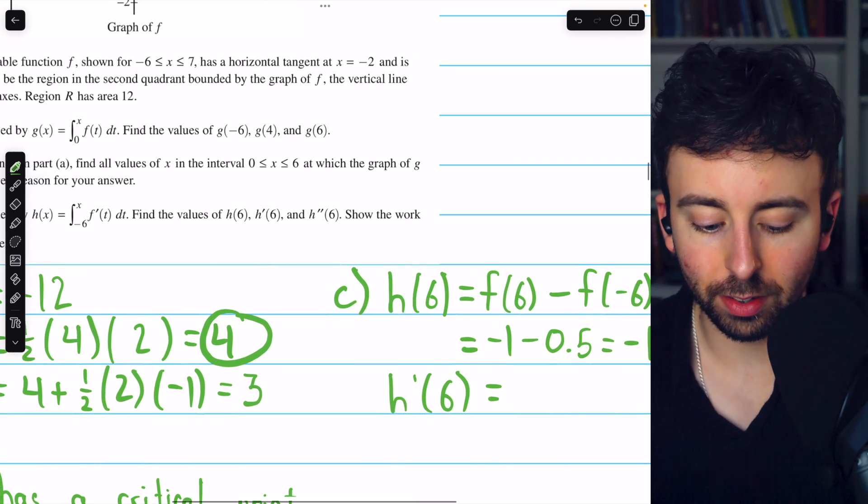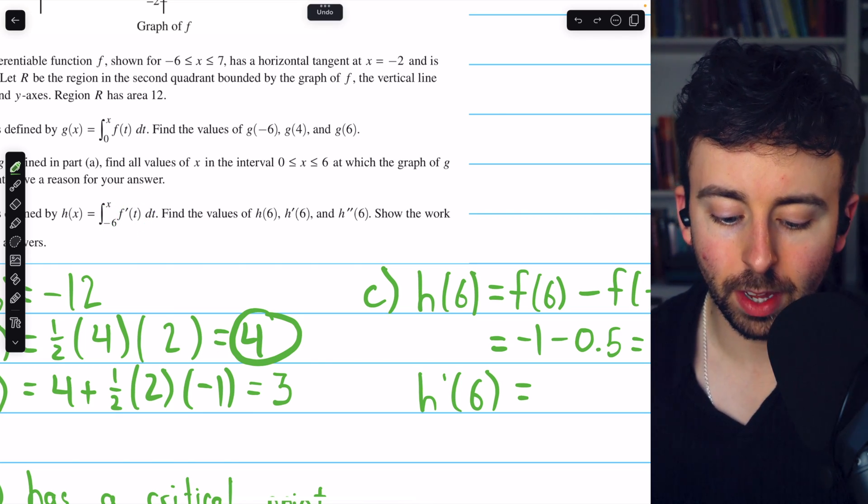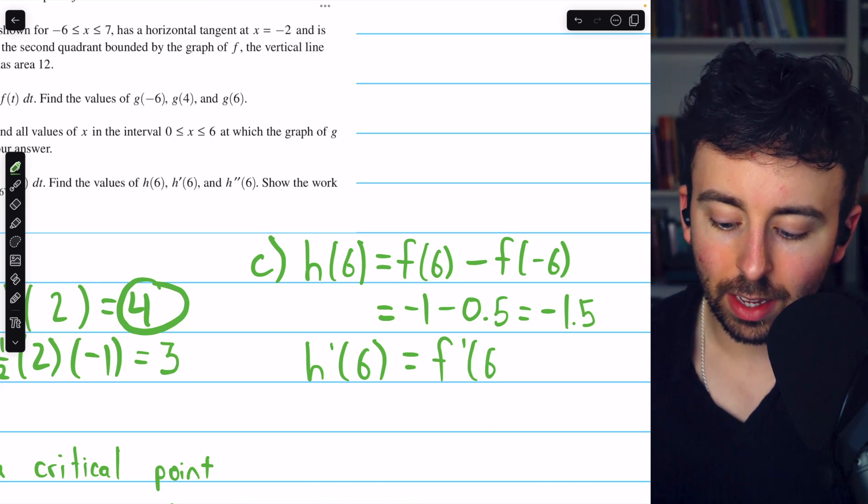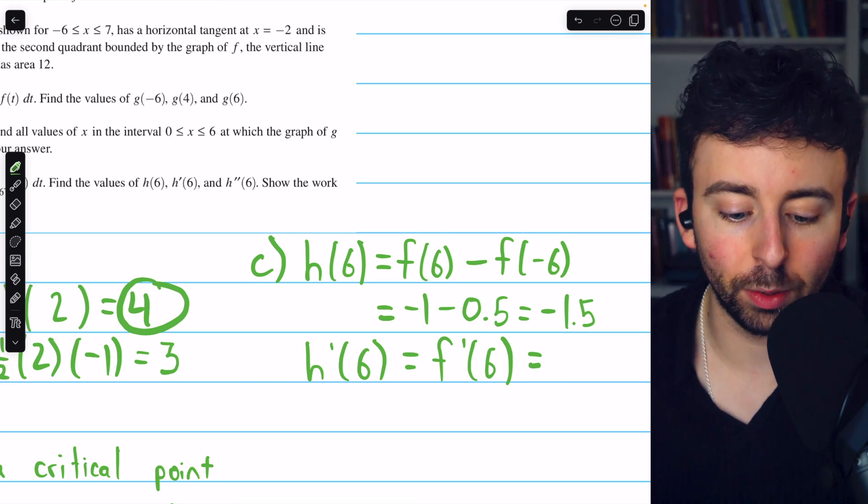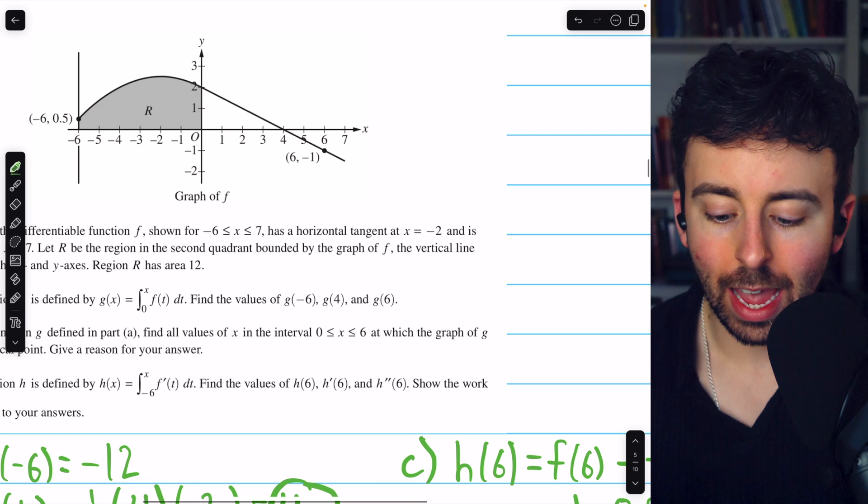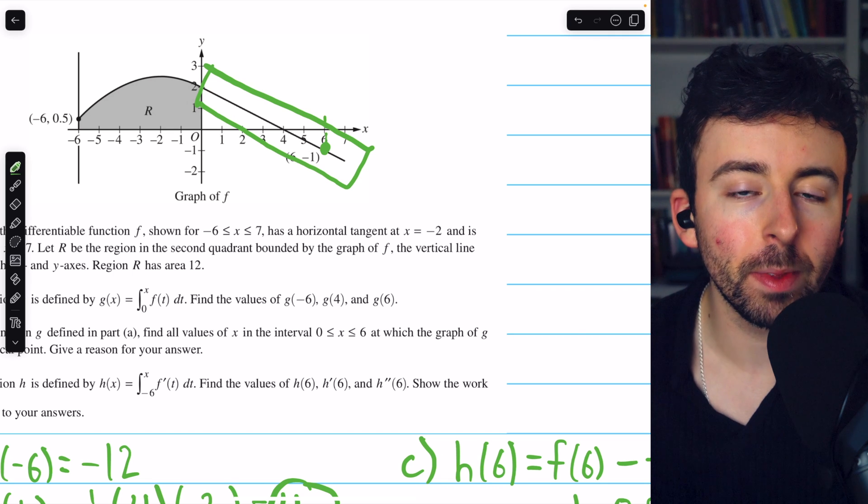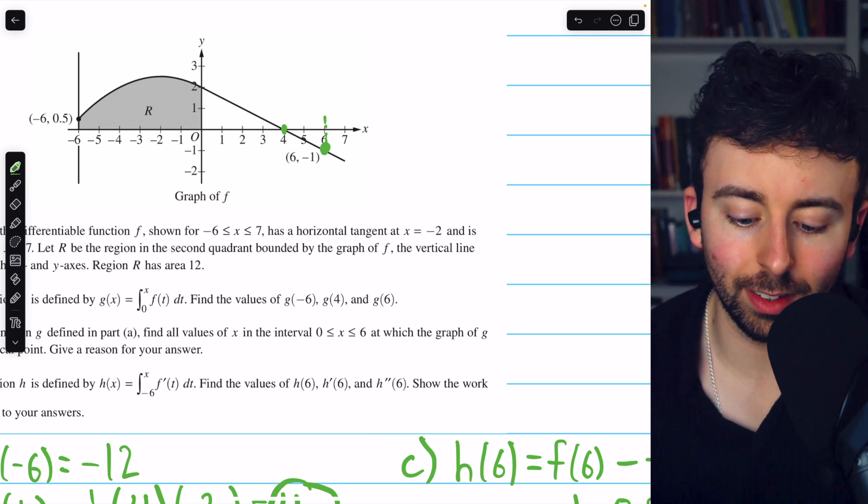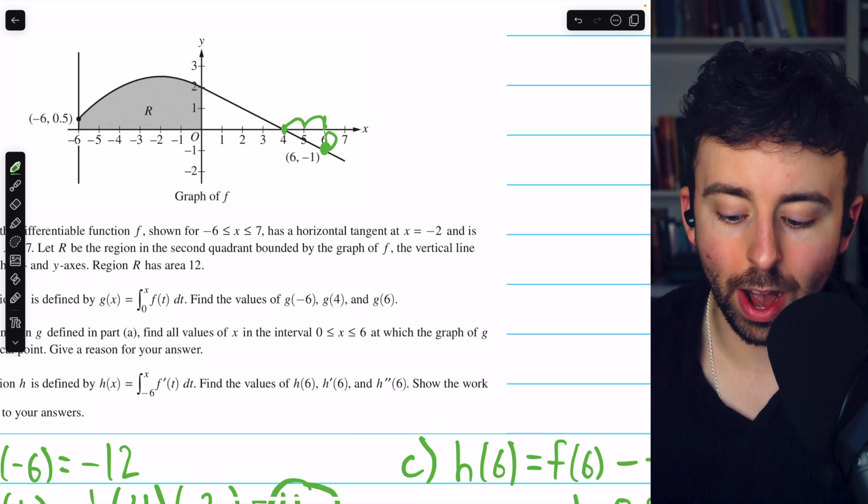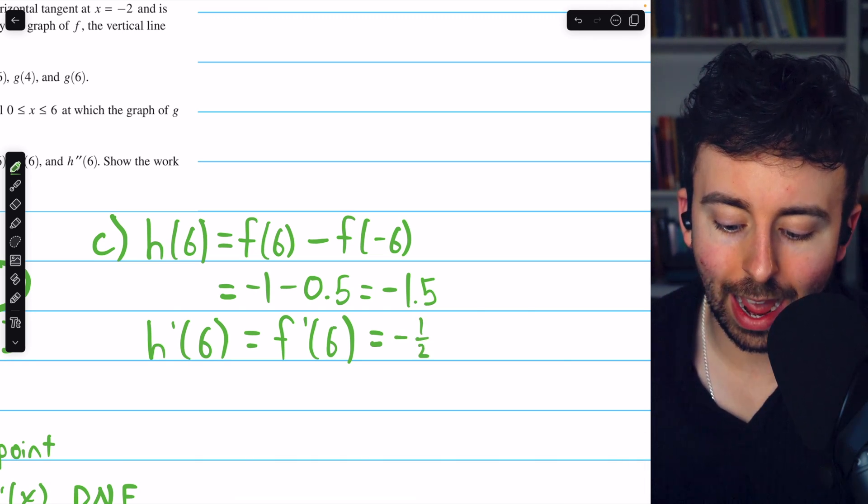Now, what about h prime of 6? Well, the derivative just undoes the integral, so h prime of 6 is actually just going to be f prime of 6. h prime of 6 equals f prime of 6, and f prime of 6 is the slope of the line tangent to f at x equals 6. So let's look at the graph of f, and at x equals 6, we are over here. We know that this is linear, and so the derivative is just going to be the slope of this line. We can see two points here that allow us to quickly calculate the slope. The line goes over 2 and down 1. So that's a slope of negative 1.5. Hence, h prime of 6, which is f prime of 6, is negative 1.5.